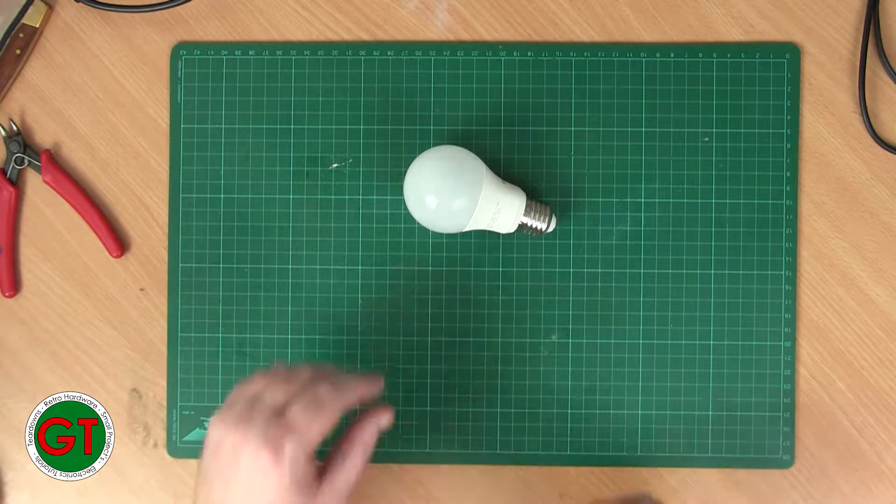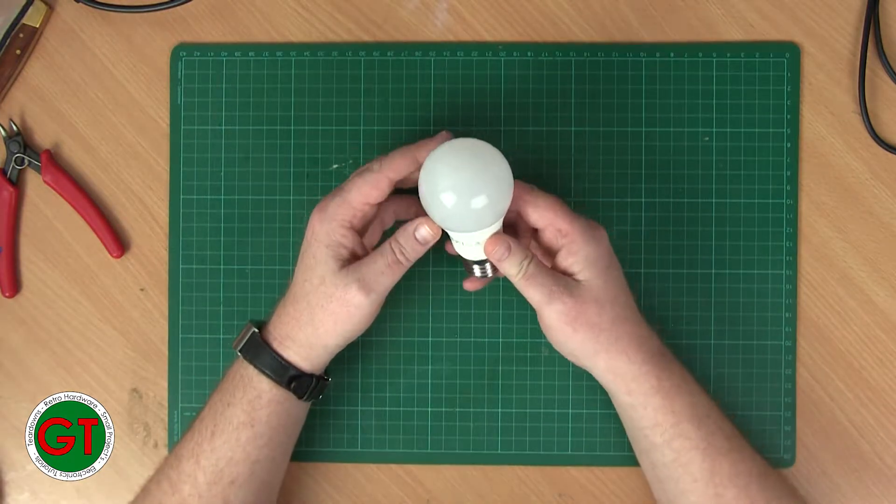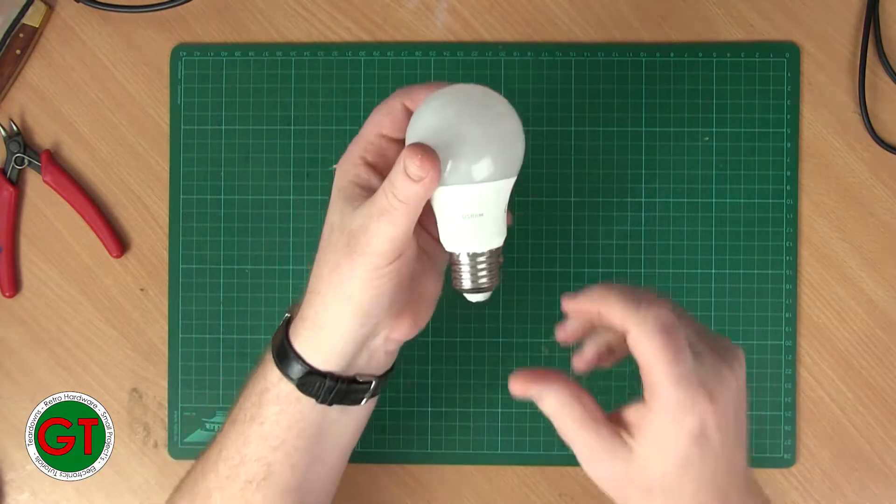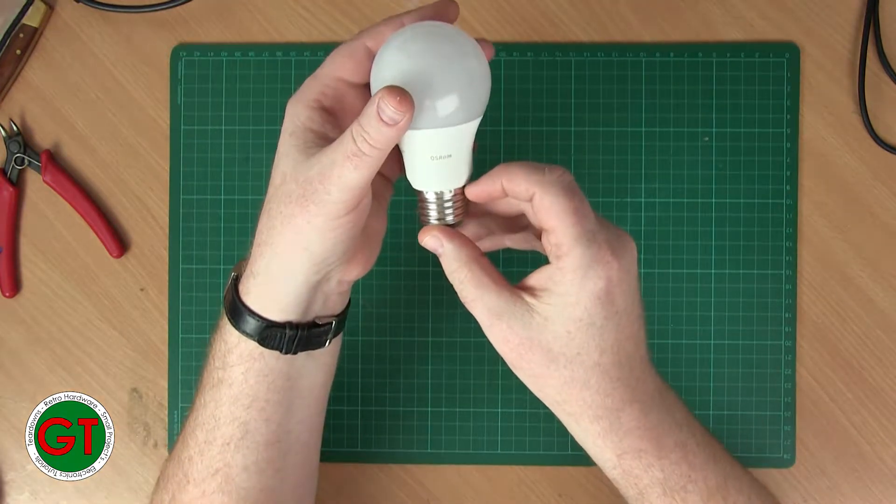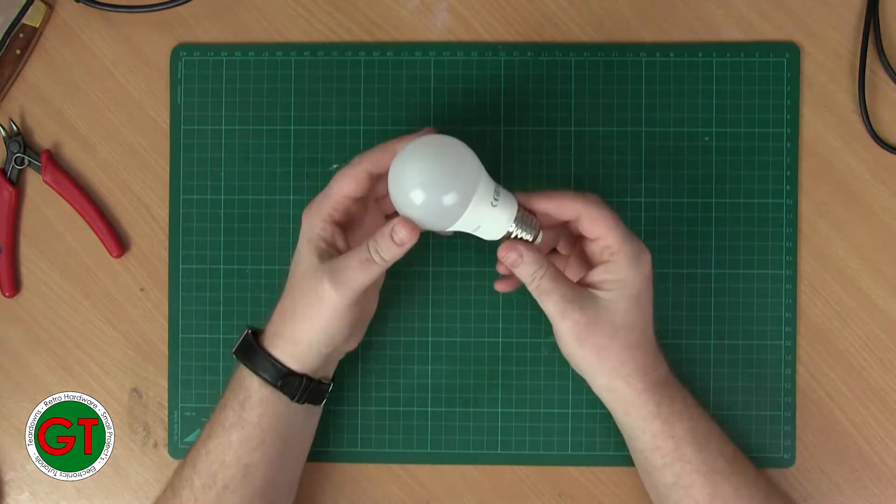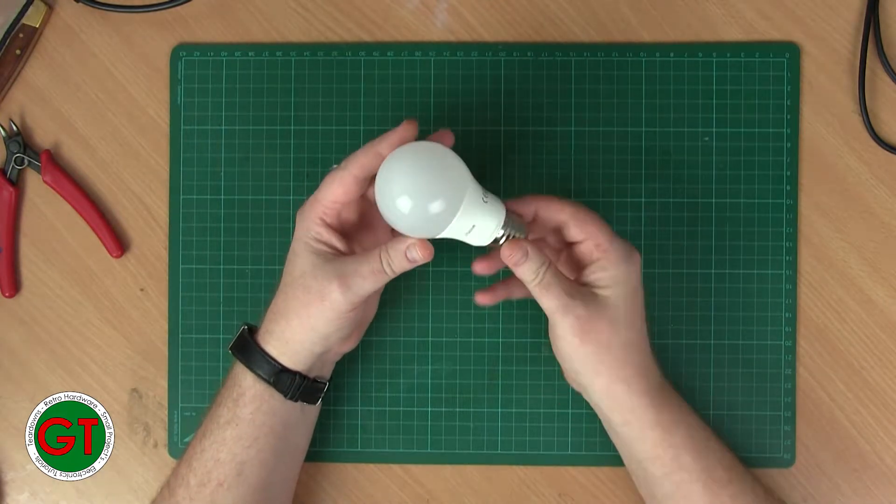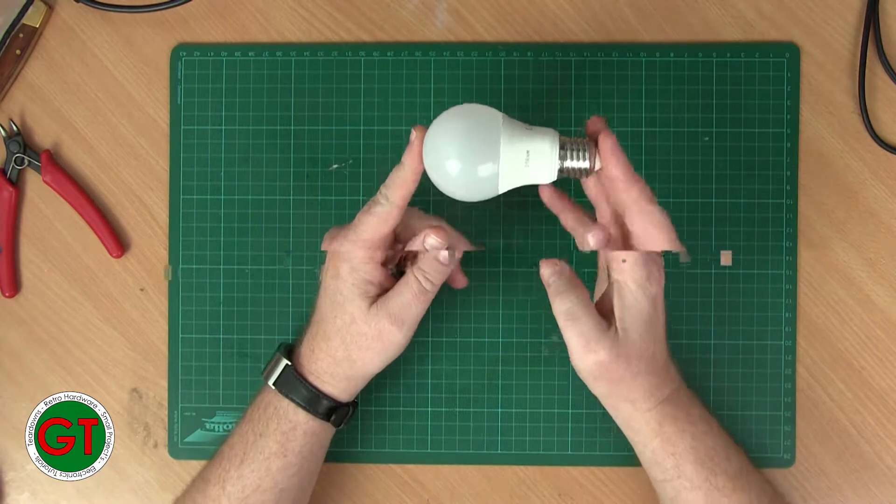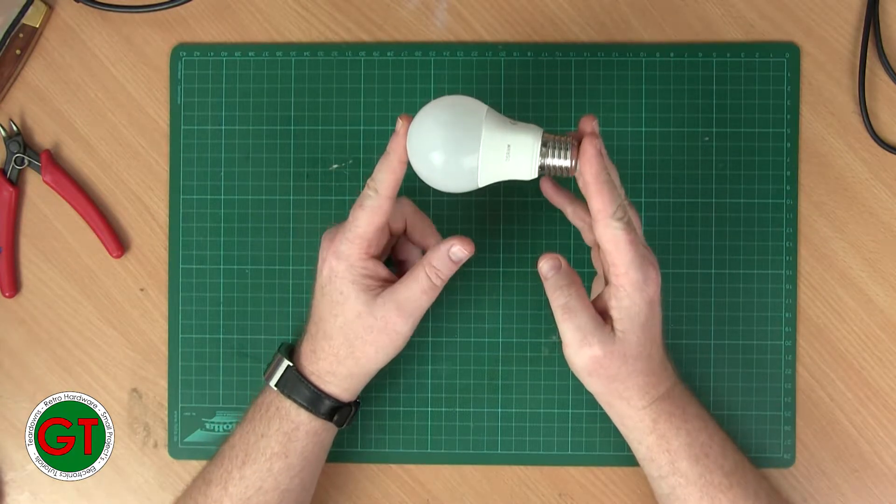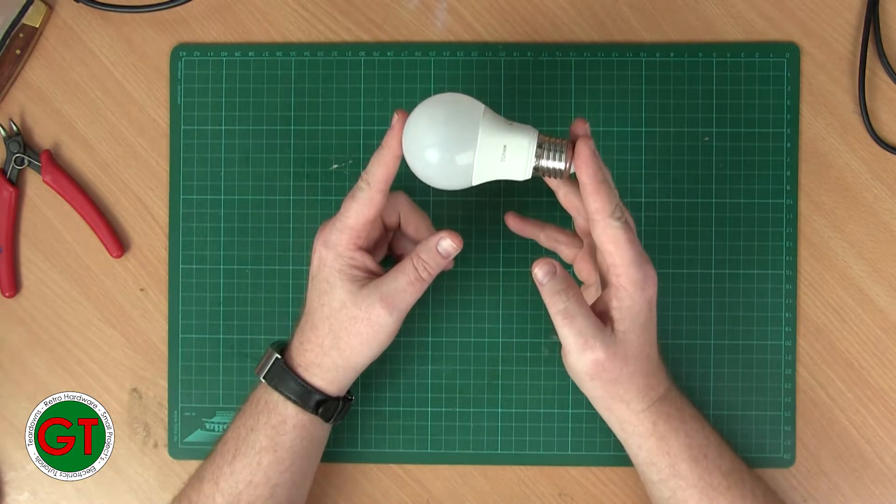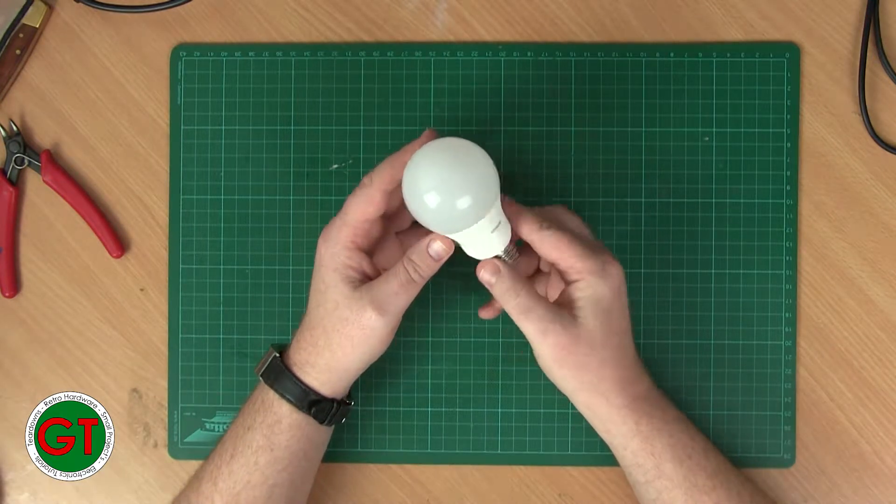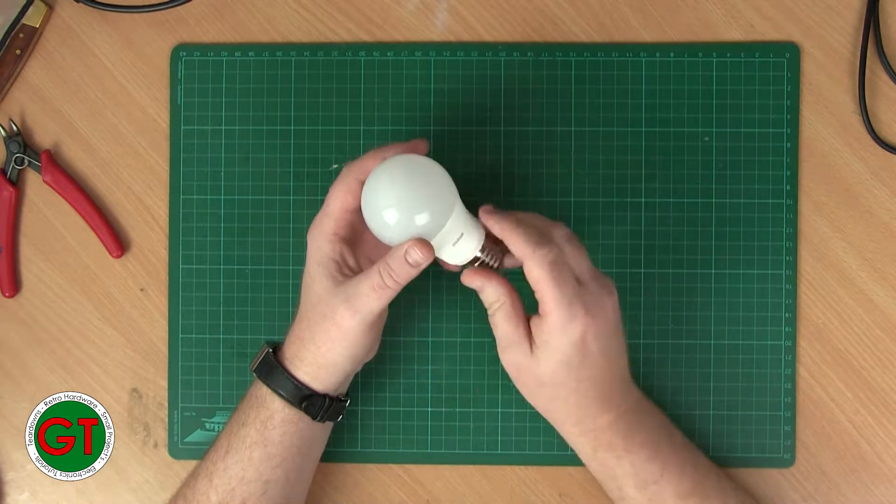Welcome back to the bench. We have for you today an autopsy of a failed LED lamp. This is an Osram branded lamp. I did contact Osram and asked them what the life expectancy of these lamps were because I literally bought a three pack of these about six months ago and two of them have already failed. I switched the lights on, it briefly came on for a split second, flashed, and then just went completely out.